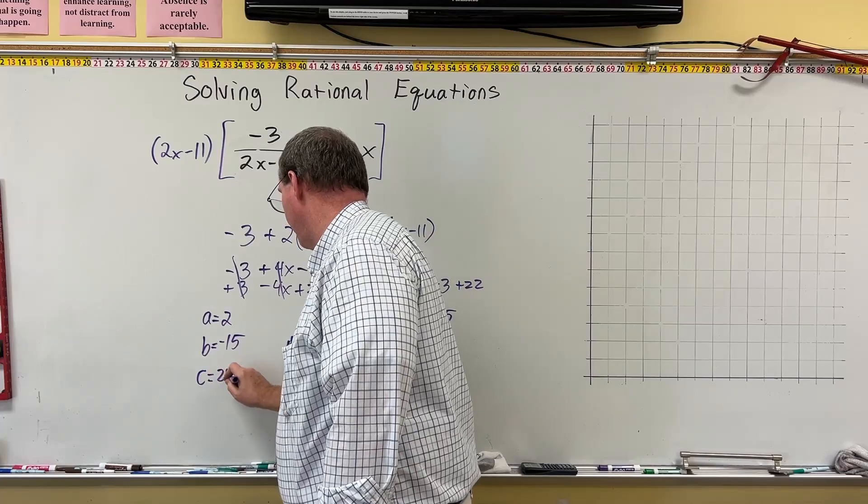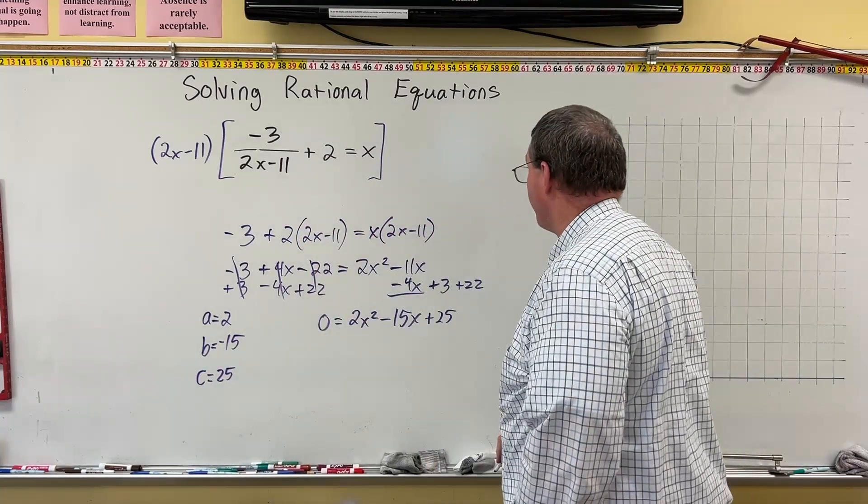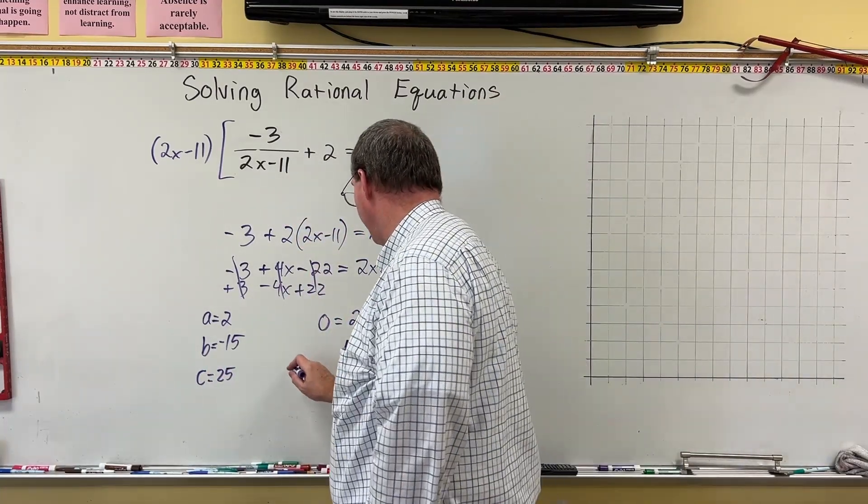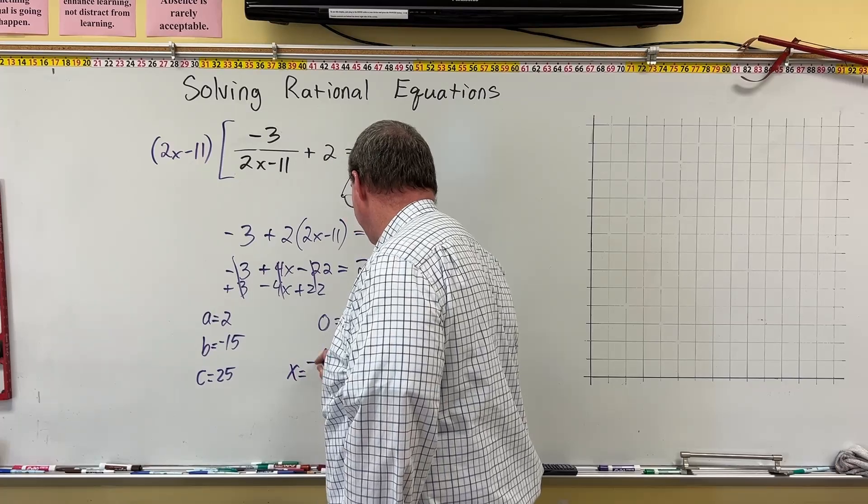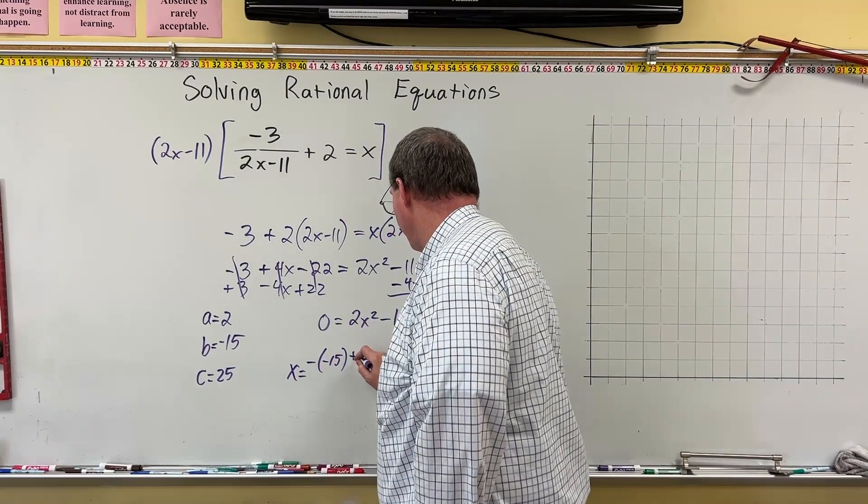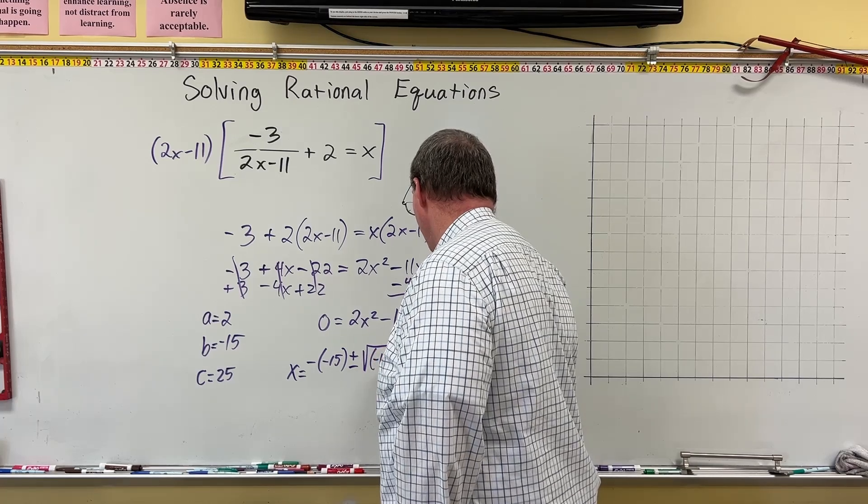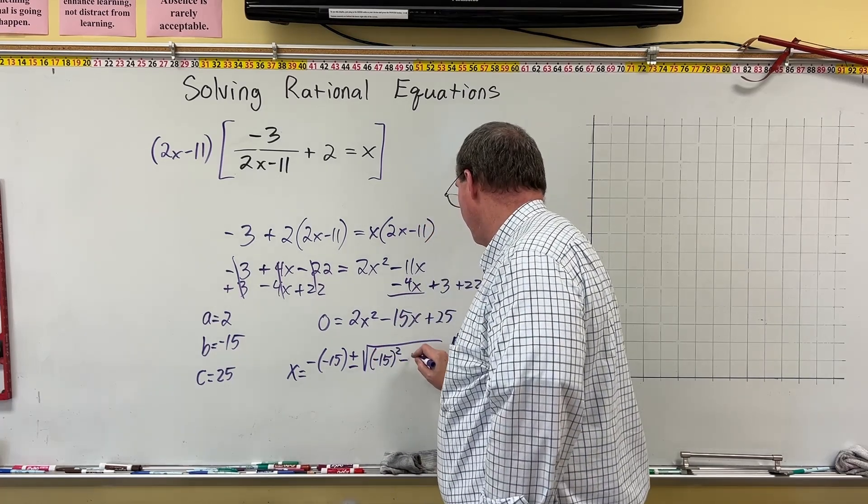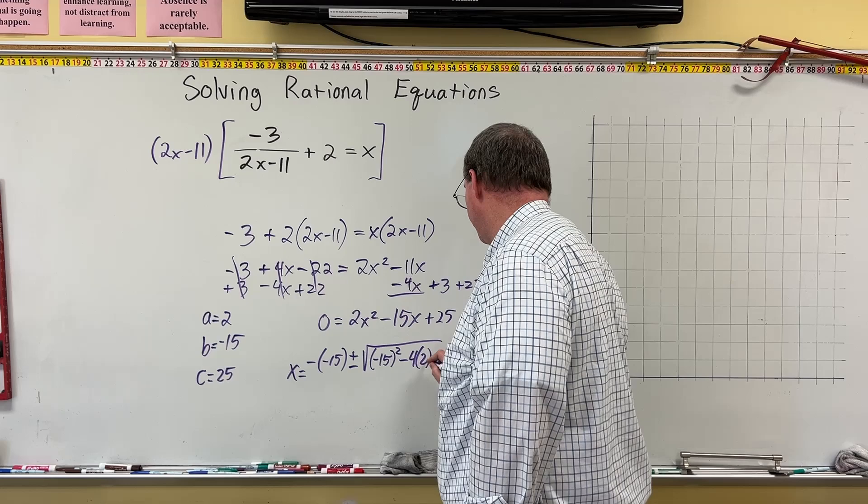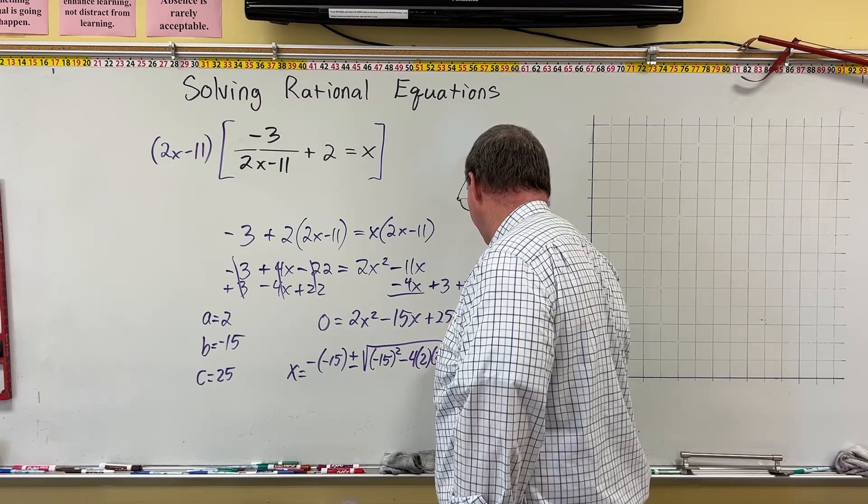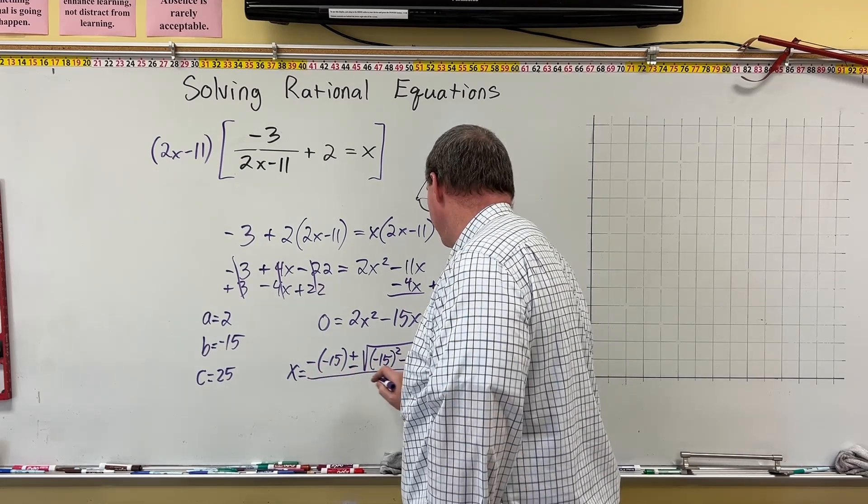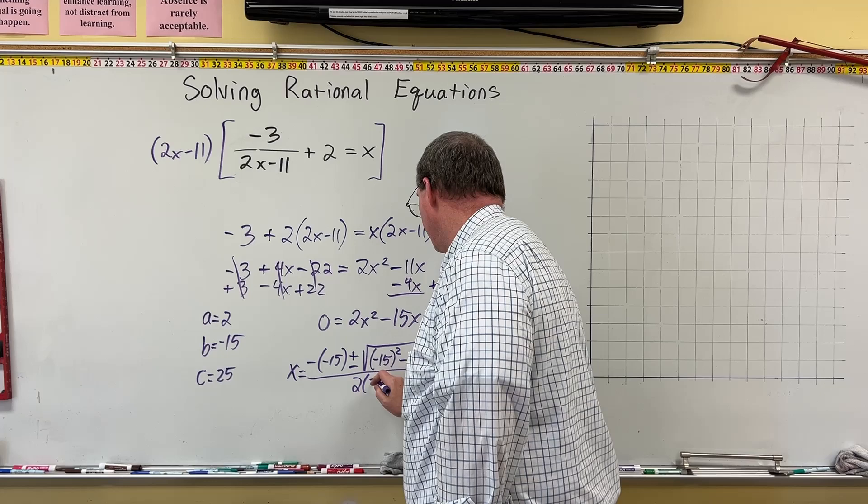Okay. All right. So I'll use the quadratic formula here. I'll start down here. x is equal to negative b. So it's negative negative 15 plus or minus the square root of b, negative 15, squared minus 4 times a, which is 2, times c, which is 25. All over 2 times a. That's 2 times 2.